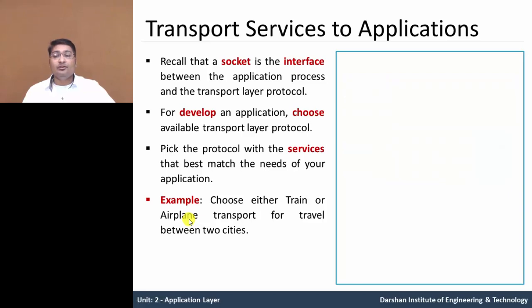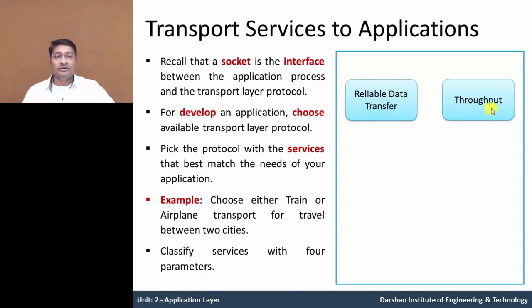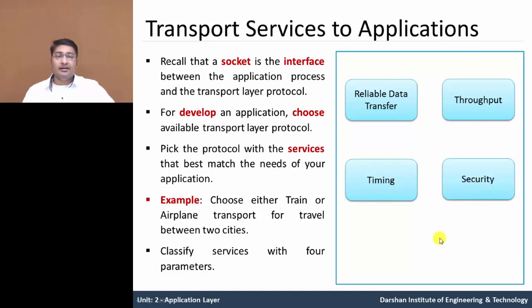We need to classify the services of a particular transport layer protocol using four parameters. The first parameter is reliable data transfer. Second, throughput. Third, timing. And the fourth one is security. Let's understand each in detail.